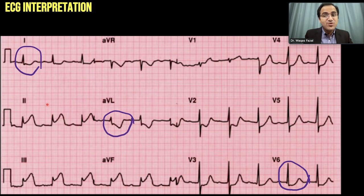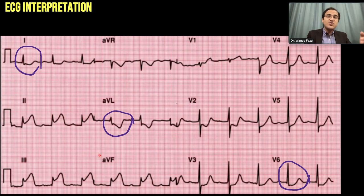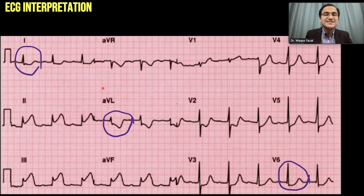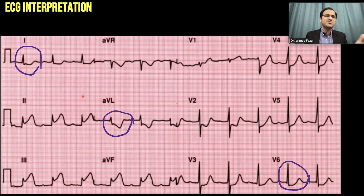Since the current is flowing in the direction of leads 2, 3, AVF, there is positive deflection and ST segment elevation. Since the current is flowing away from leads 1, AVL, V6, you will see ST segment depression — and that ST segment depression is not due to sub-endocardial ischemia. That is the reciprocal change. Very simple, very easy.